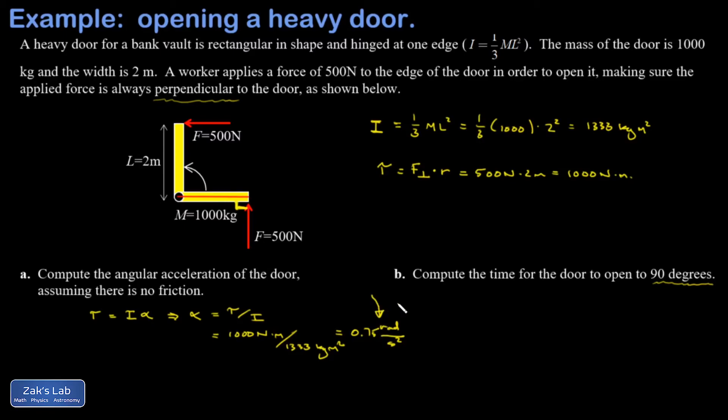For example, the angular acceleration is given in radians per second squared, not degrees. You have to remember that 90 degrees is the special angle pi over 2, or if you don't remember that, you could do a unit conversion.